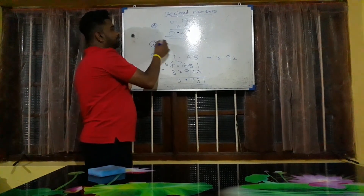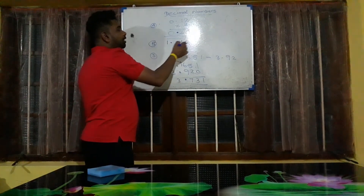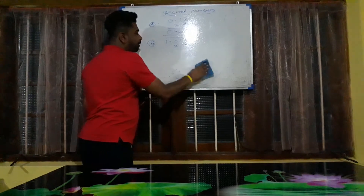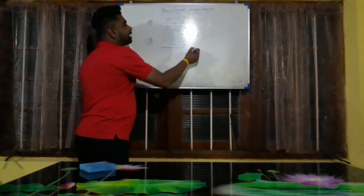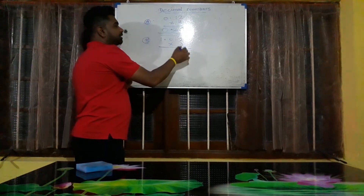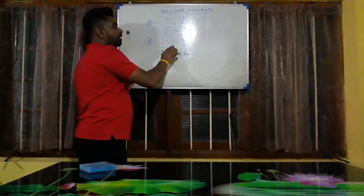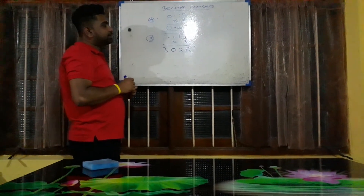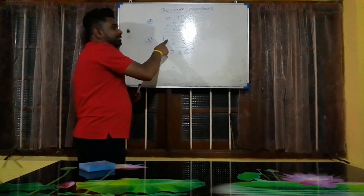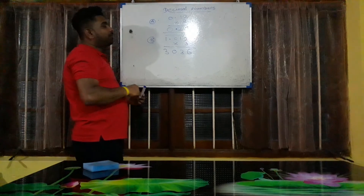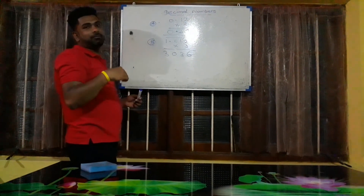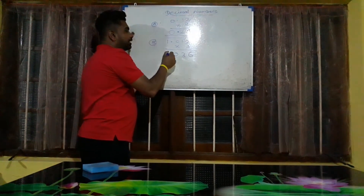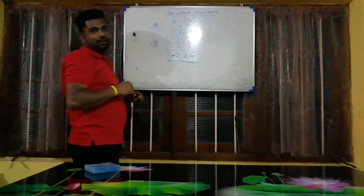Another example: 1.012 multiplied by 3. Multiply ignoring the decimal: 3 times 2 is 6, 3 times 1 is 3, 3 times 0 is 0, 3 times 1 is 3. After the decimal point in 1.012 there are three numbers. So from the answer, separate three digits and keep the decimal point. The answer is 3.036.